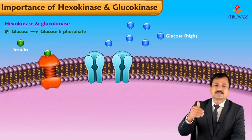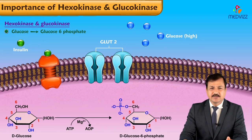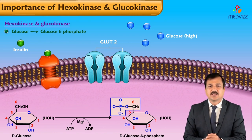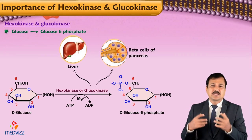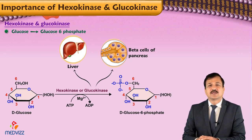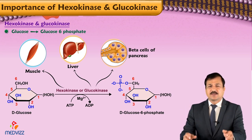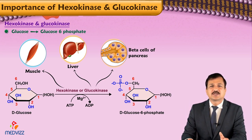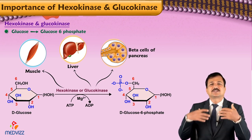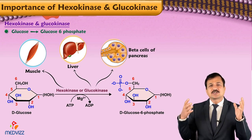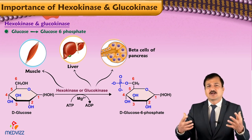When glucose gets into the cell, it is done through GLUT transporters. Glucose is phosphorylated at its sixth carbon — done by glucokinase in hepatic tissues and beta cells of the pancreas, while the same reaction is done by hexokinase in extra-hepatic tissues. Phosphorylation traps glucose inside the cell, because glucose-6-phosphate simply cannot come out of the cell.